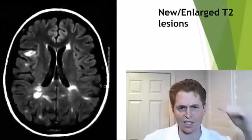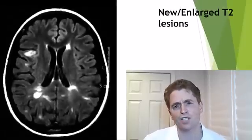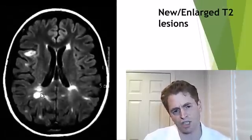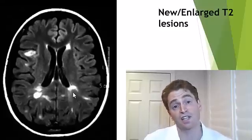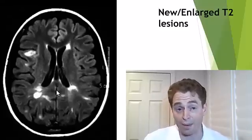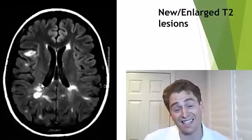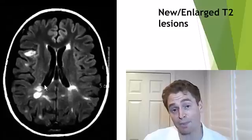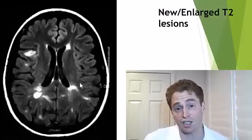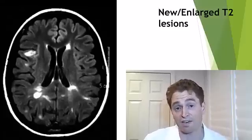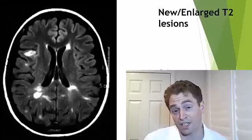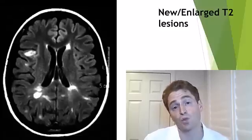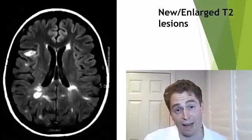We'll start with MRI outcomes. You're looking at an axial slice through the brain. This is a T2 FLAIR image, and these are typical T2 bright multiple sclerosis lesions. If a lesion is not present on a prior MRI, it's new. If an existing lesion appears larger, that's an enlarging lesion. Modern disease-modifying therapies that are highly effective are very good at suppressing new active lesions, which normally correlate with risk of relapses.